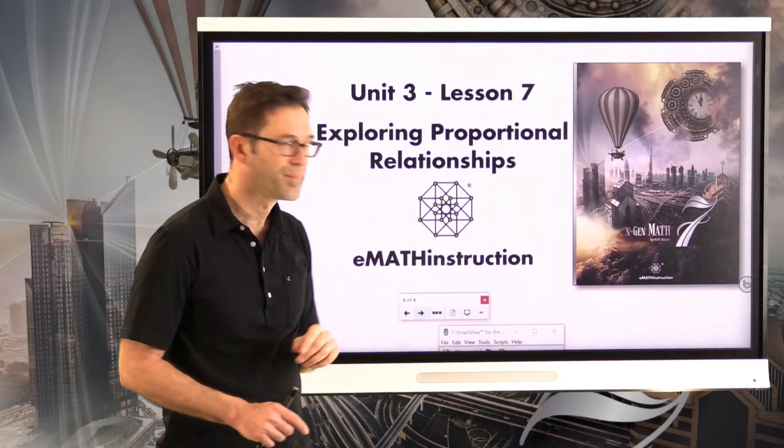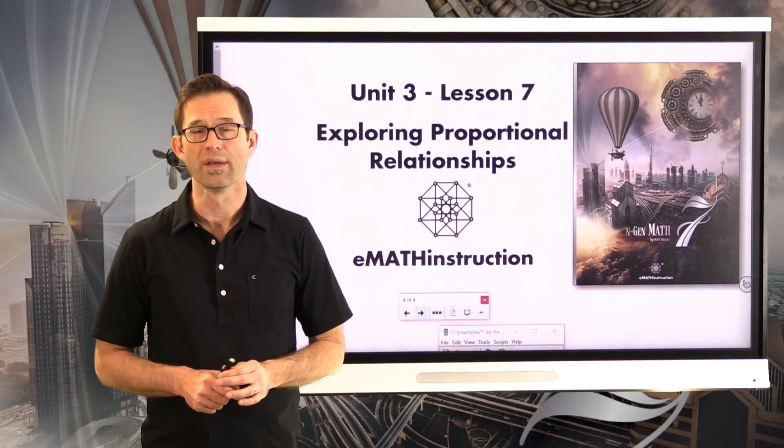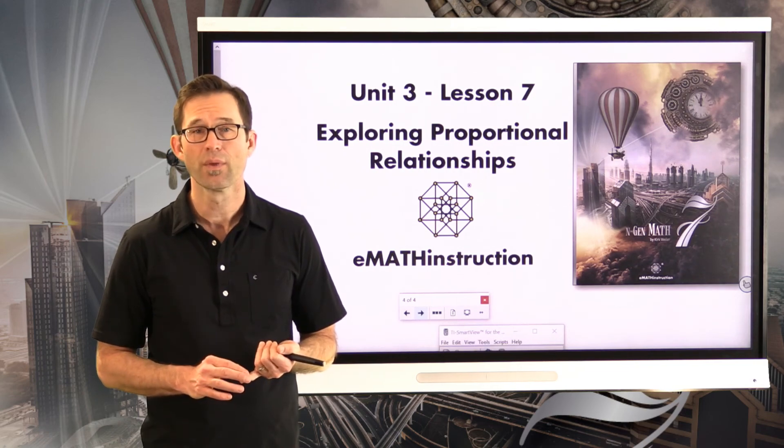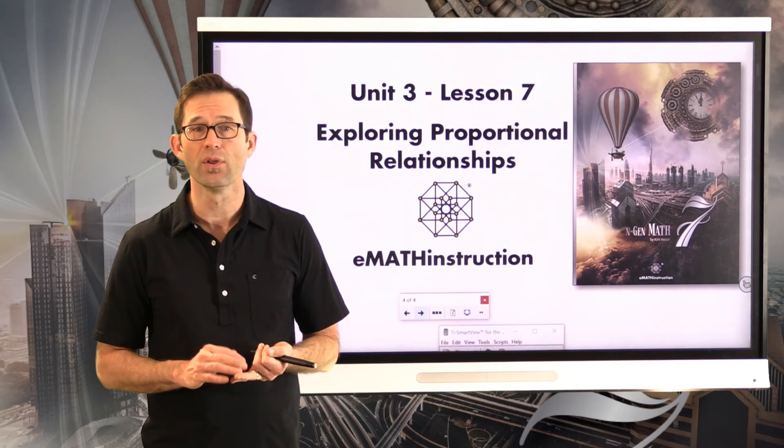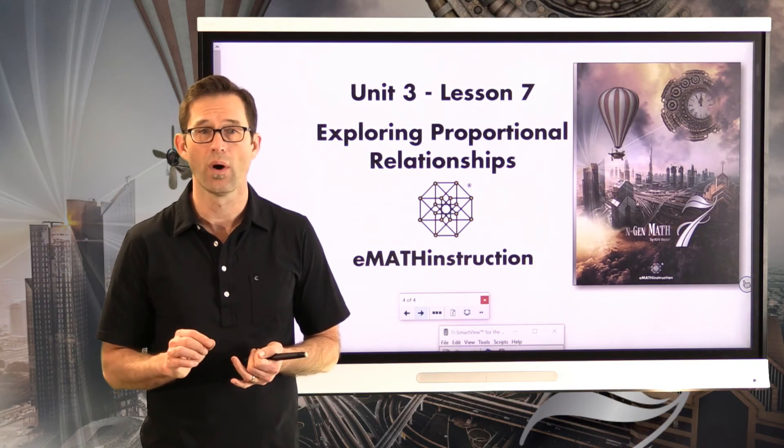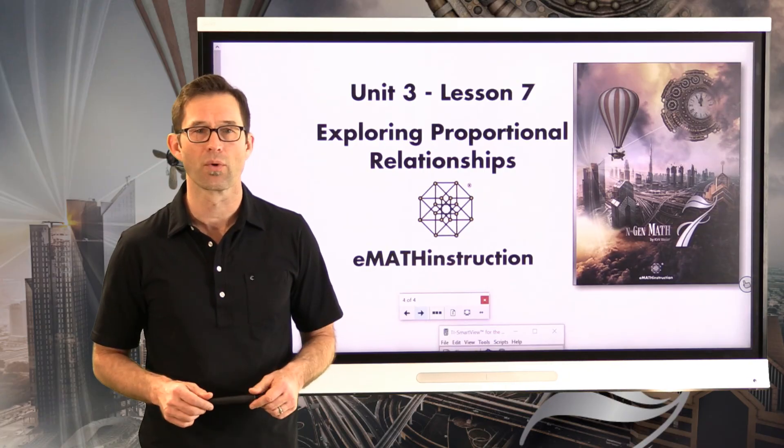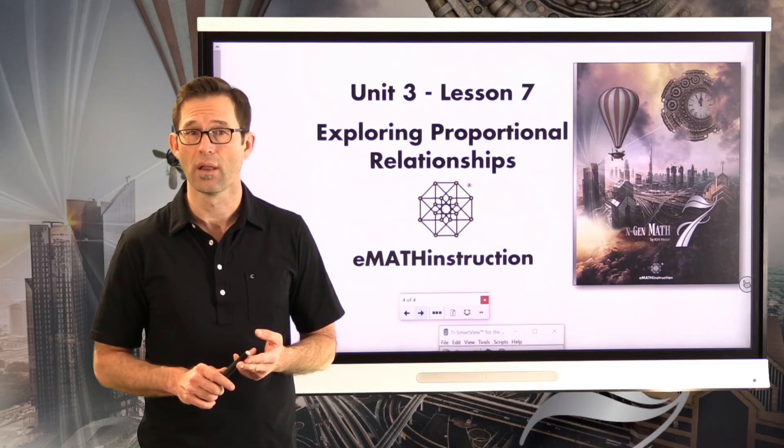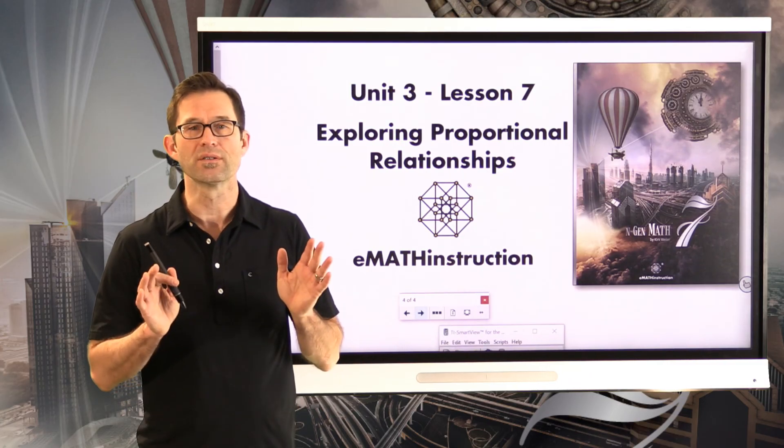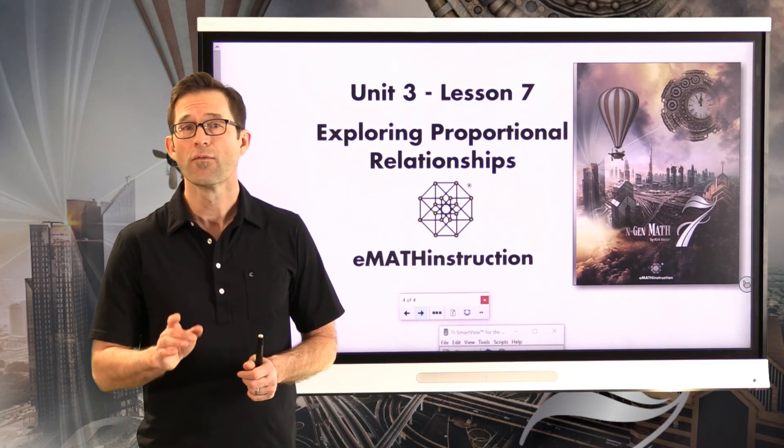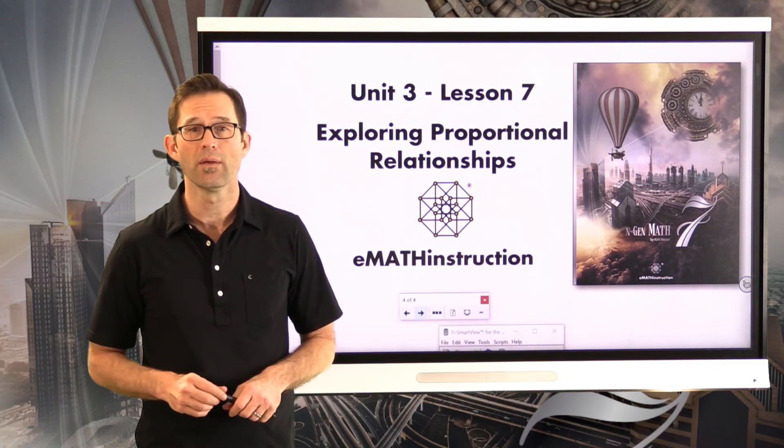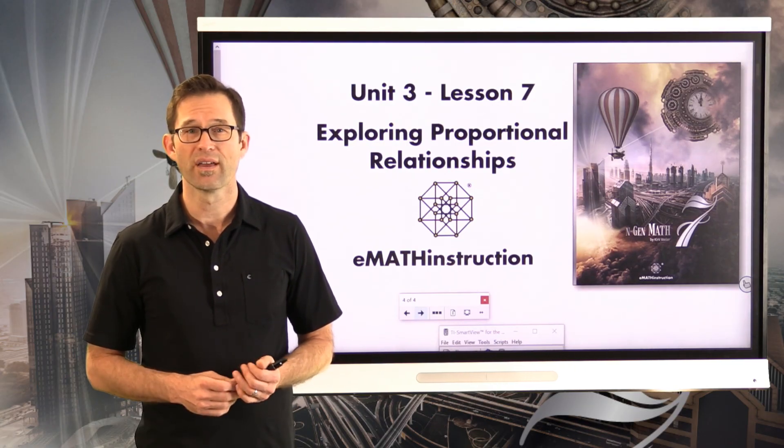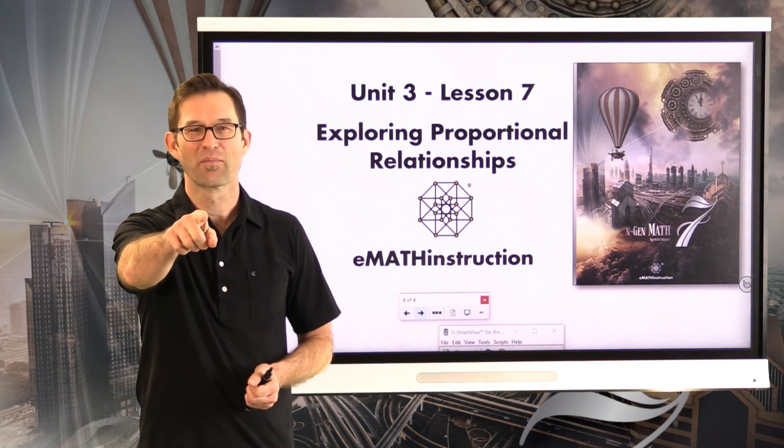Let's wrap this up. Today, we explored proportional relationships, and we looked at them from the perspective of those ratios that give us unit rates. We looked at the fact that you can see the unit rate on a graph if you look at what the y value is when the x value is one. And we also looked at two really important features of proportional graphs: one, that they go through the origin, and two, that they fall along a straight line. We're going to be working with this a ton in the future lessons. For now, I just want to thank you for joining me for another NGen Math 7 lesson by EMath Instruction. My name is Kirk Weiler, and until next time, keep thinking, and keep solving problems.